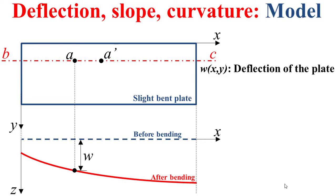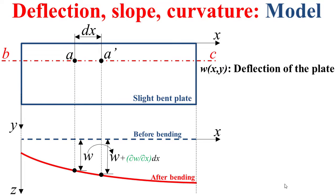Now if we consider another point A prime, distant from A by the distance dx, the deflection at this point will be the deflection W — which is the deflection at the previous point A — plus the variation of the deflection along the direction x. The rate of the deflection along x, which is dw/dx,